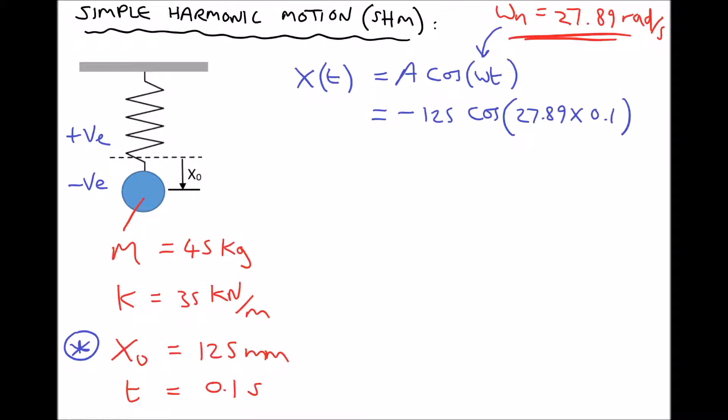So we have minus 125 times cos(27.89 × 0.1). You need to make sure your calculator is in radians, because radians is the SI unit for angle and we must use radians for this calculation. Running that through the calculator gives us 117.30 mm. So although our initial displacement was 125 mm below the centre line, after 0.1 seconds we are 117.3 mm above the line — we've almost completed a half cycle.